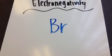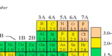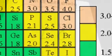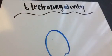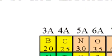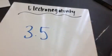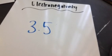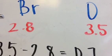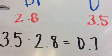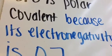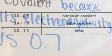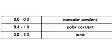We have to find the electronegativity of bromine, so we look on the chart and it is 2.8. Now we have to find the electronegativity of oxygen — we look at the chart and find that it is 3.5. After this we have to find the difference. We subtract 3.5 and 2.8 and we get 0.7. We see that BrO is a polar covalent bond because its electronegativity difference is 0.7. We can check this on the chart and we see that it is a polar covalent bond.